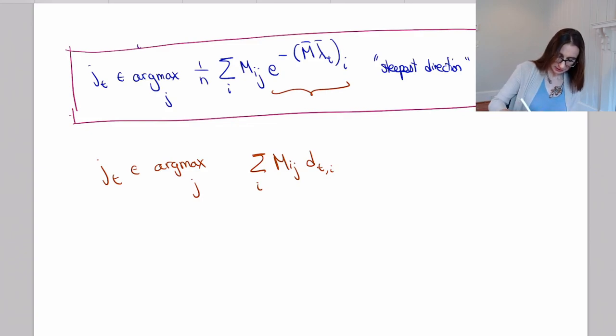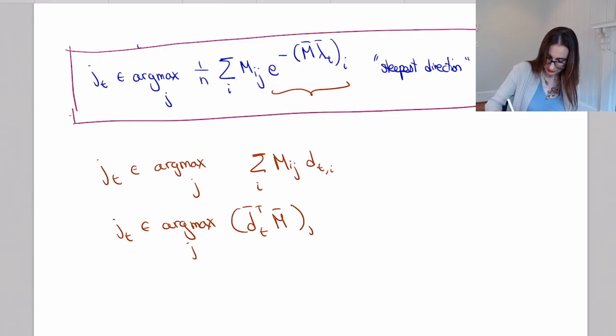Alright, so I can rewrite this as argmax over j, d transpose times j. This j, of course, being the same as that j there—we just want that particular column of M to worry about.